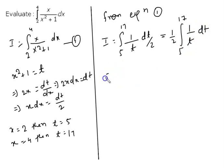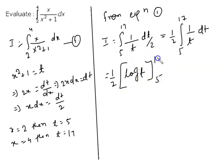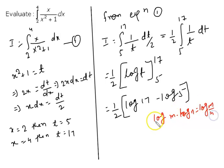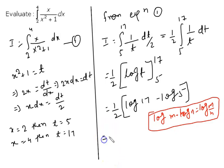We know that the integration of 1 by t is equal to log t, so we get (1/2) times [log t] with limits 5 to 17. Putting in the limits: (1/2) times (log 17 minus log 5). Using the logarithm formula — log m minus log n equals log(m by n) — we can write the final answer as (1/2) log(17 by 5).